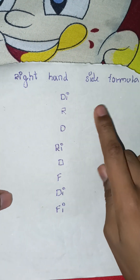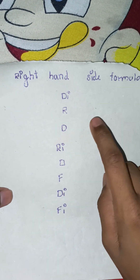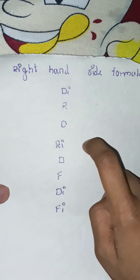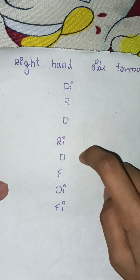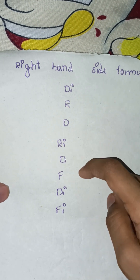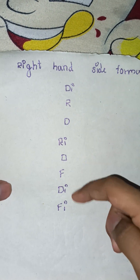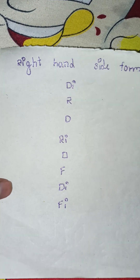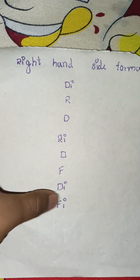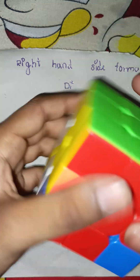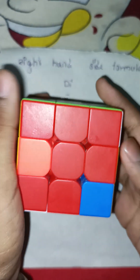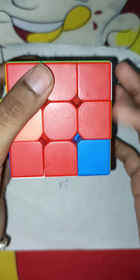The formula moves are: D inverse, R, D, R inverse, D, F, F inverse, D inverse, F inverse. Look at the formula.